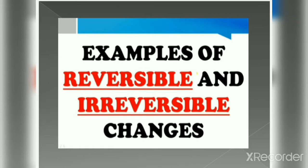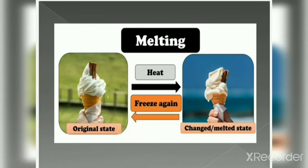Now we will see some more examples of reversible and irreversible changes. First is melting. Let's take an ice cream on a hot summer day — my ice cream has started melting and I want it back in its original state. Can I get it back? Yes, I just have to freeze this ice cream again by putting it in the fridge, and I will get it back into its original state. So this is a reversible change.